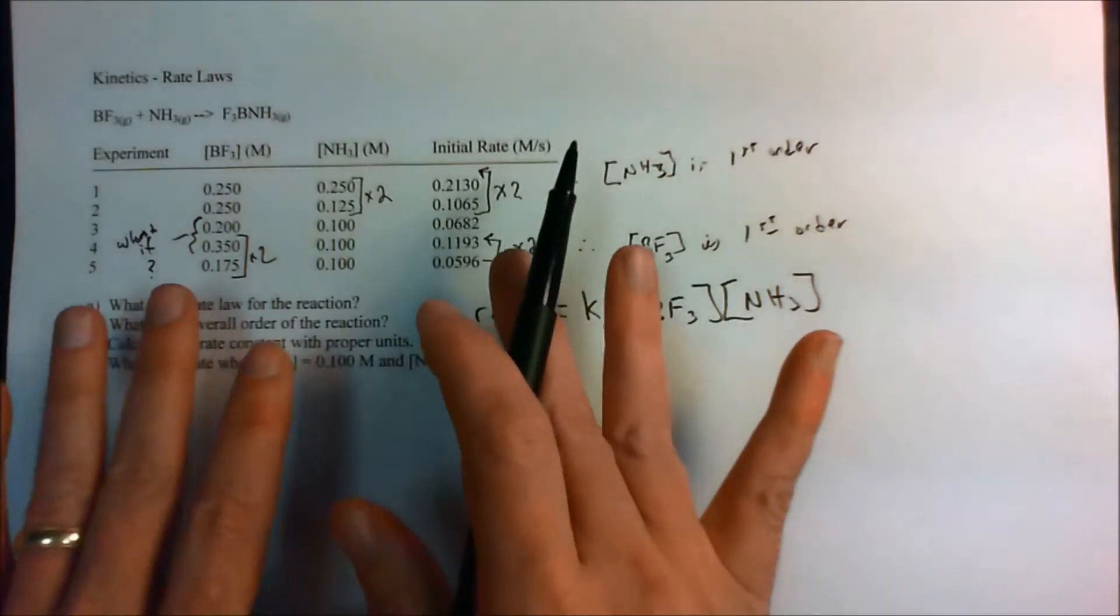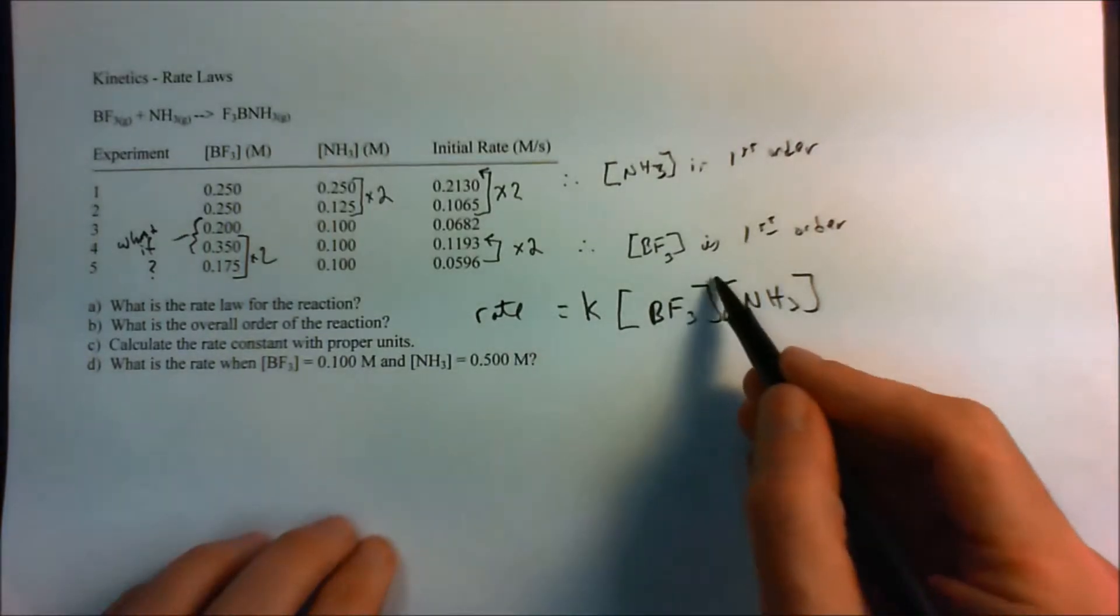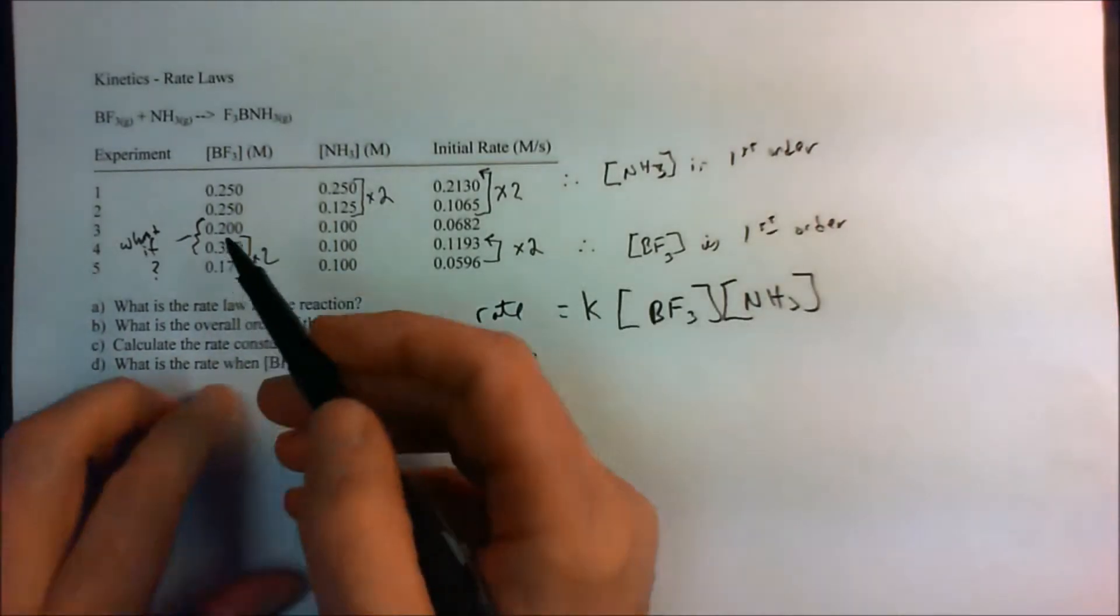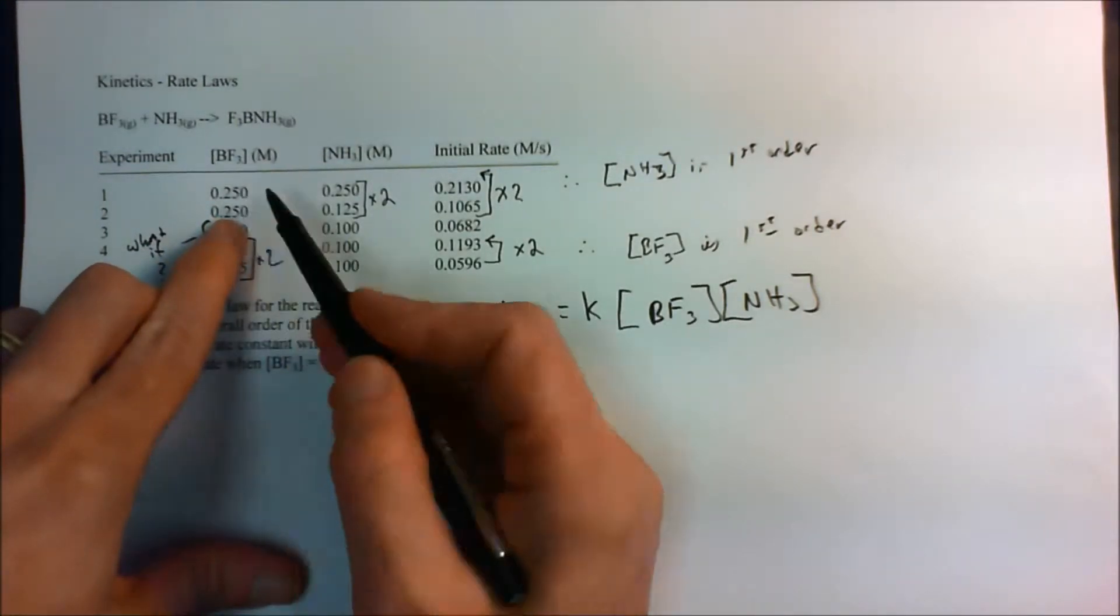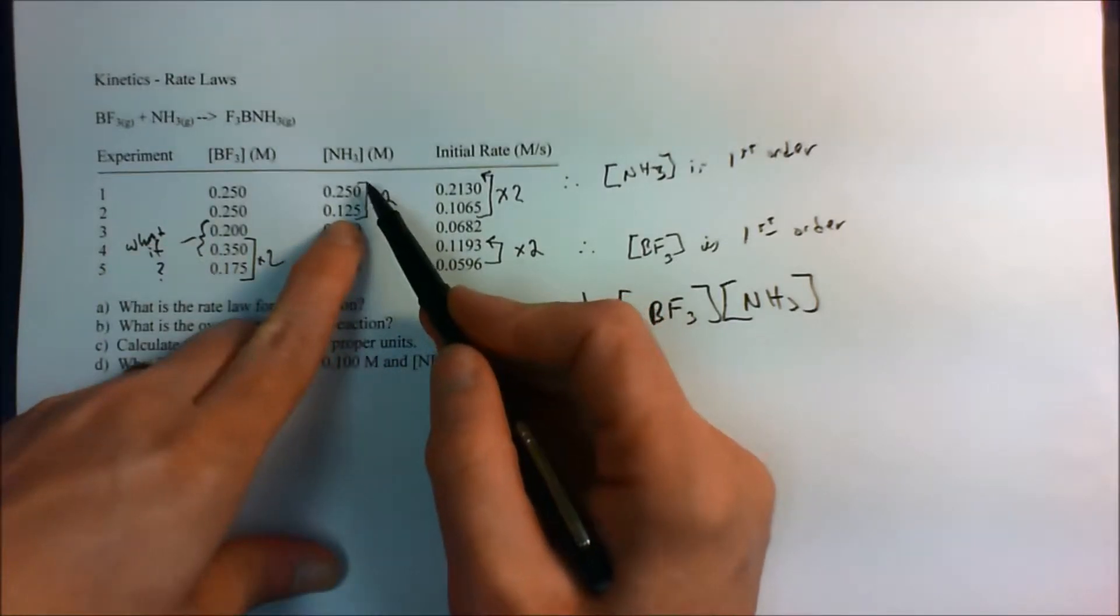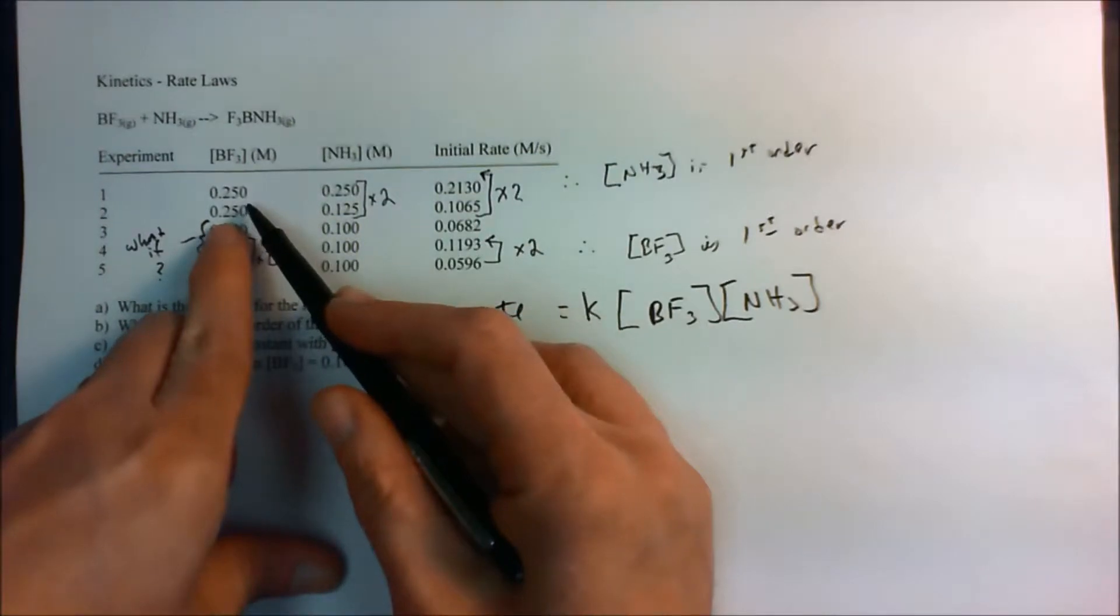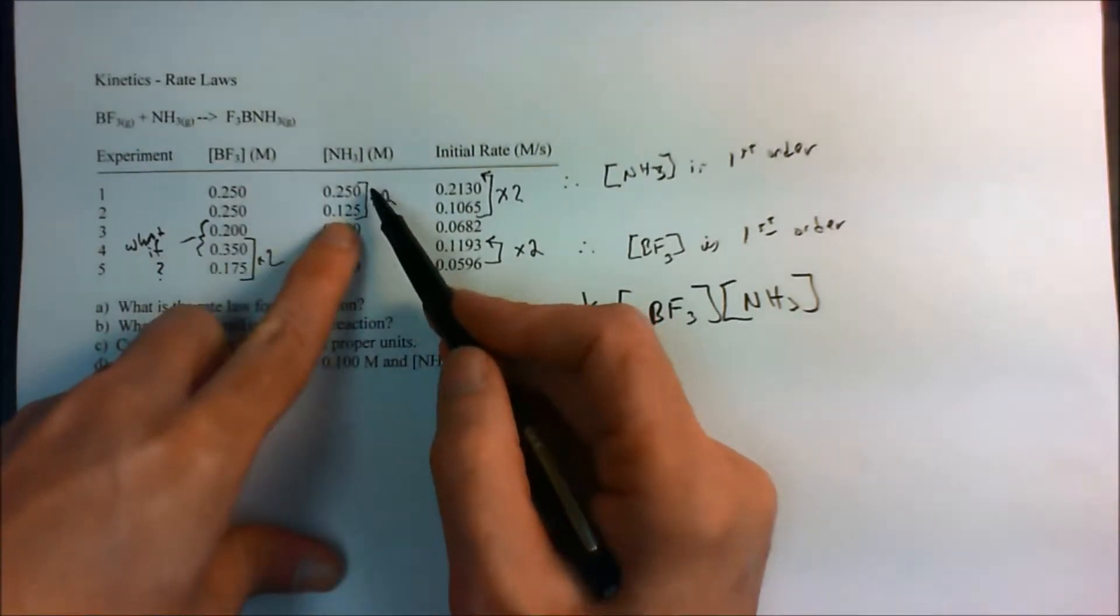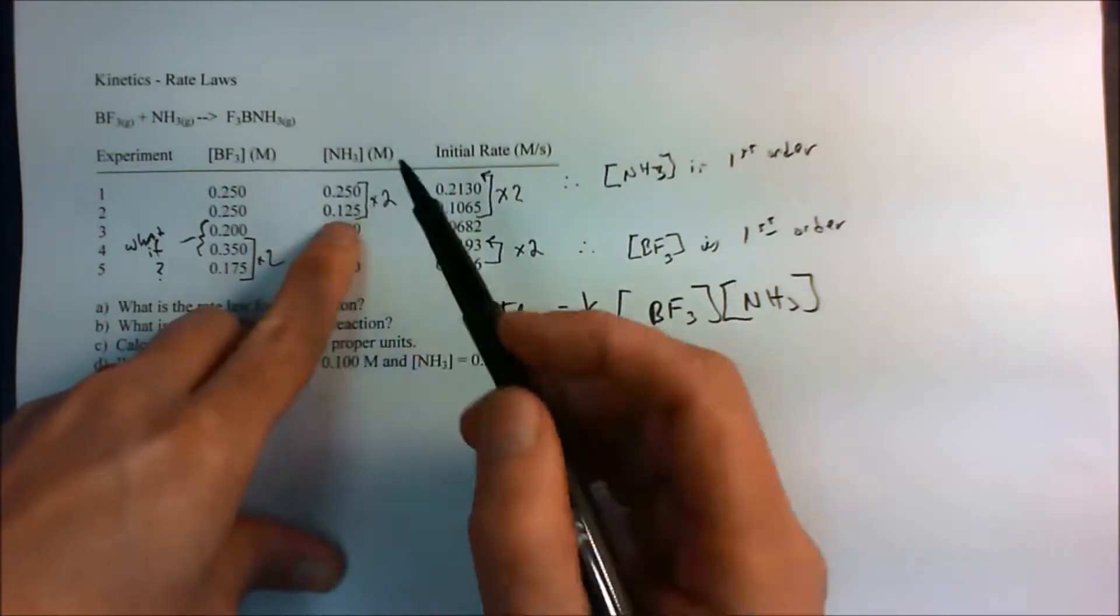But many times when we have this data here, our instructors are kind to us and they arrange the data in a way, or perhaps we do the experiment in a way, that actually makes it very easy for us to determine the rate law for the reaction. What you do is you try to keep pairs of concentrations constant and do something simple. Like if you can, double the concentration. And we did there. We kept BF3 boron trifluoride constant and we doubled the concentration.